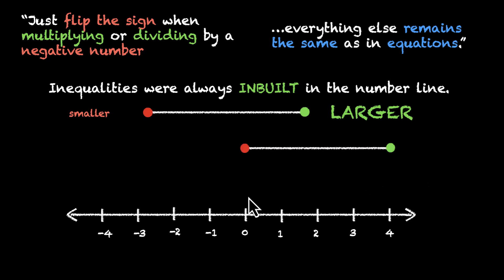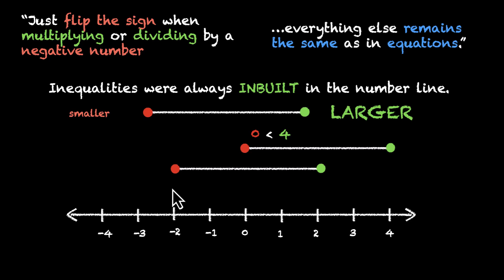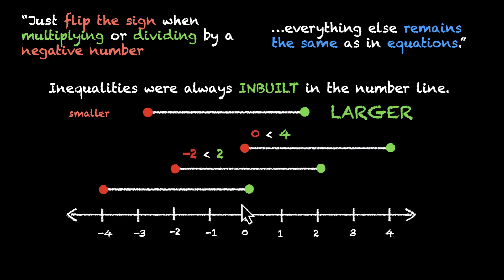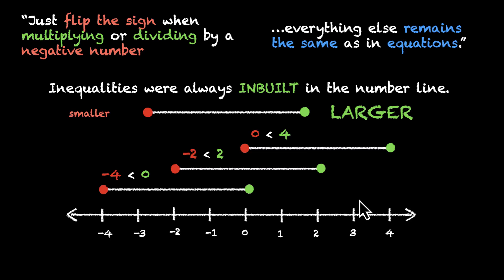Here are a few examples. Zero is less than four — zero is on the left and four is on the right. Minus two is less than two. And minus four is less than zero. In all of these examples, the number on the left is always less than the number on the right. If we understand this visually, we'll be able to understand the rules of working with inequalities.